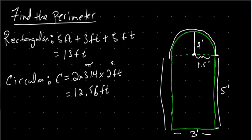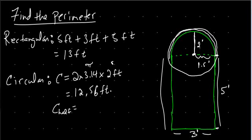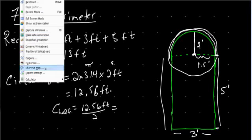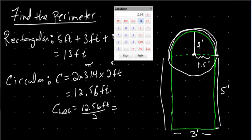Now the key is to know that twelve point five six feet is the circumference of the entire circle if we went all the way around. It's clear that we only need half of that. So the half circumference is twelve point five six divided by two, and using the calculator, that gives us six point two eight feet.